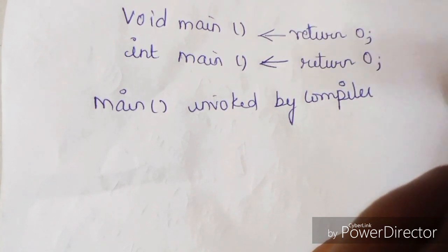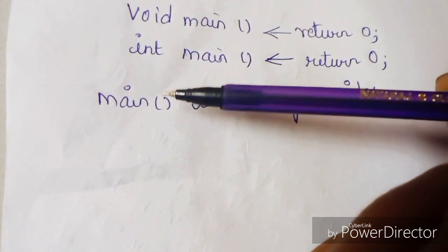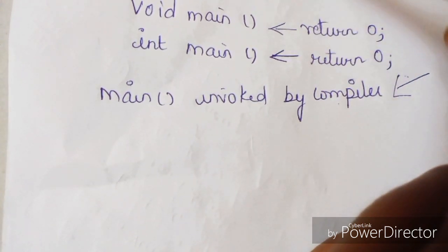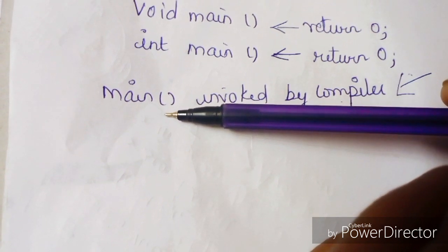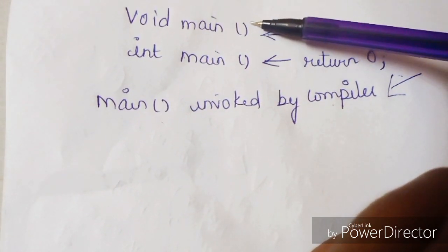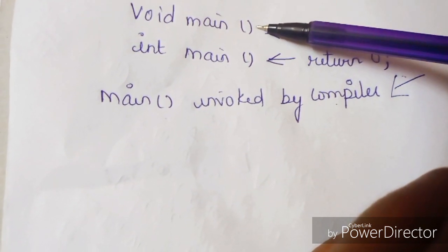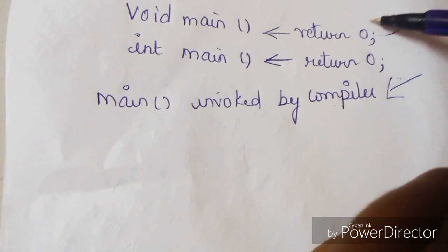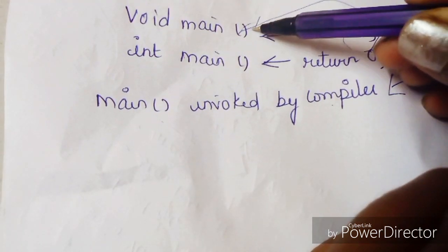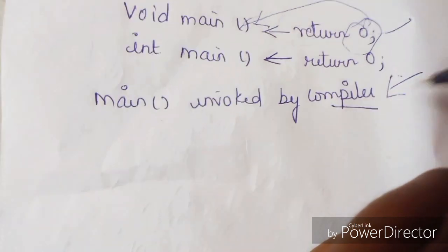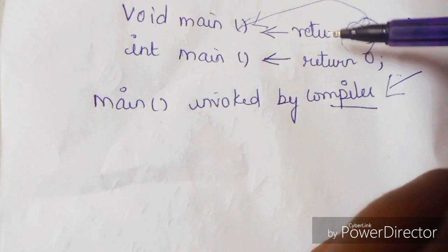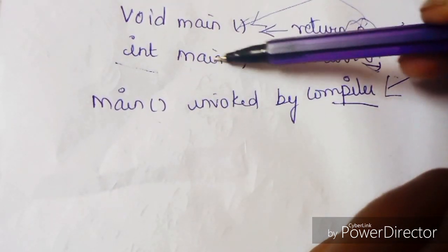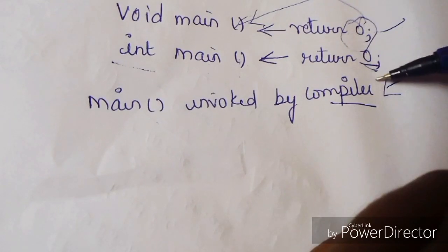With void main and int main, the main function is invoked first and then compiled. If the program uses void main, execution begins without a return value. If the program runs successfully, use return 0. If we use int main, the return type is int and we return 0 to indicate successful execution.